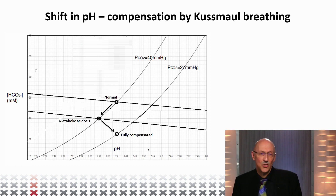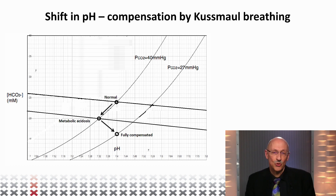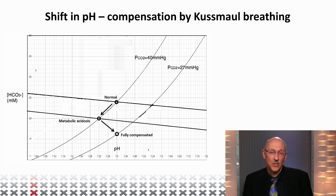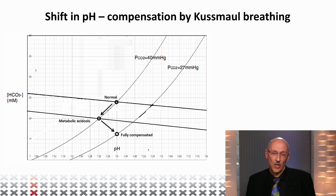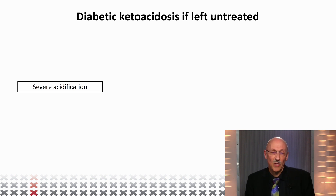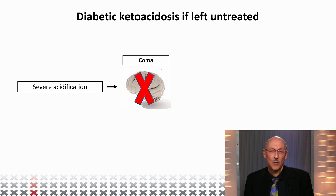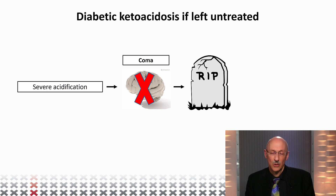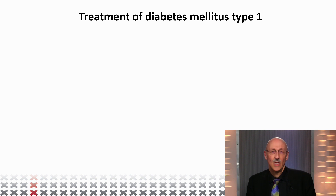This shift in breathing compensates by exchanging much more CO2 with the environment. If that fully works, you reach a fully compensated situation and return to pH 7.4. Of course this cannot work for a longer time, so you really have to treat this as quickly as possible. The severe acidification comes from the imbalance in insulin and glucagon, so you must correct that balance to prevent the coma and death that would otherwise result.